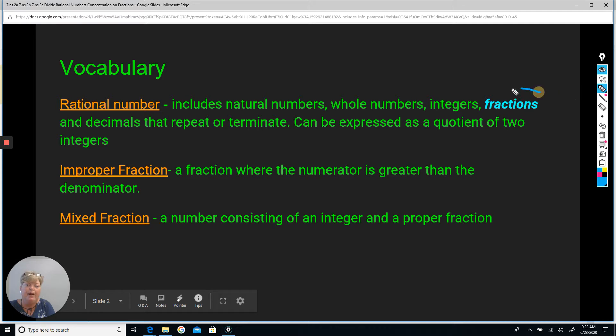But for today's lesson, we're primarily going to concentrate on improper fractions where the numerator is greater than the denominator. An example would be 7 over 3, the numerator and the denominator.